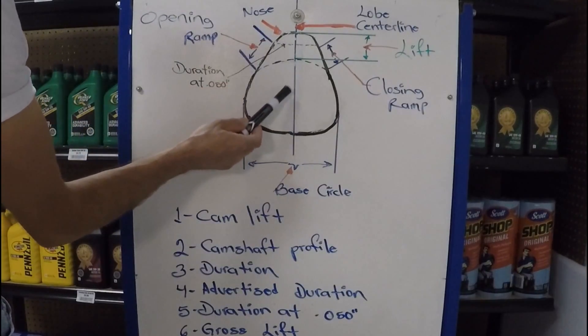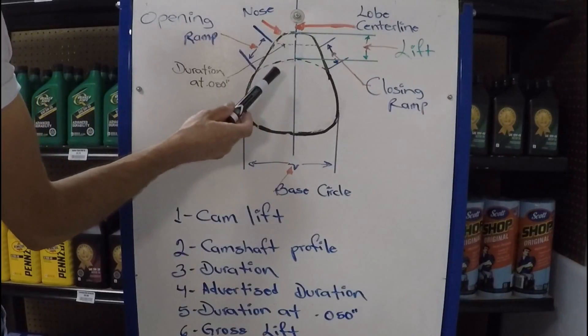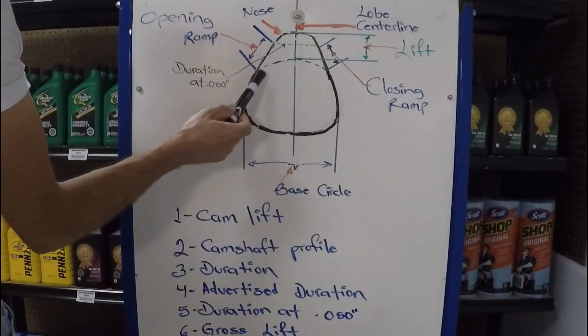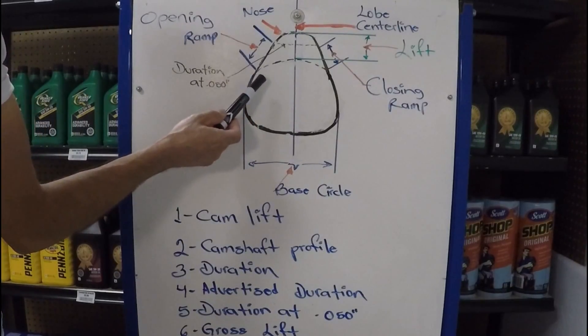And companies that make the camshafts, they're always making different configurations of advertised duration and duration of 50 thousandths of an inch. And they're all going to vary depending on what they want to accomplish.